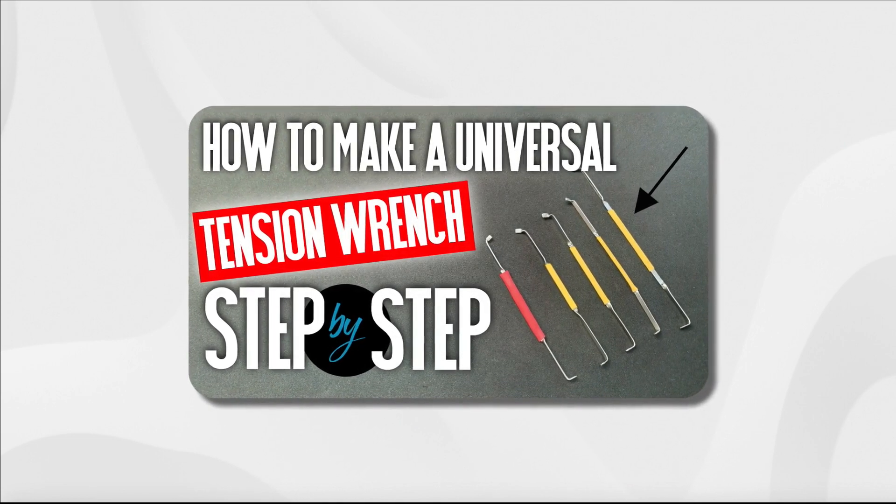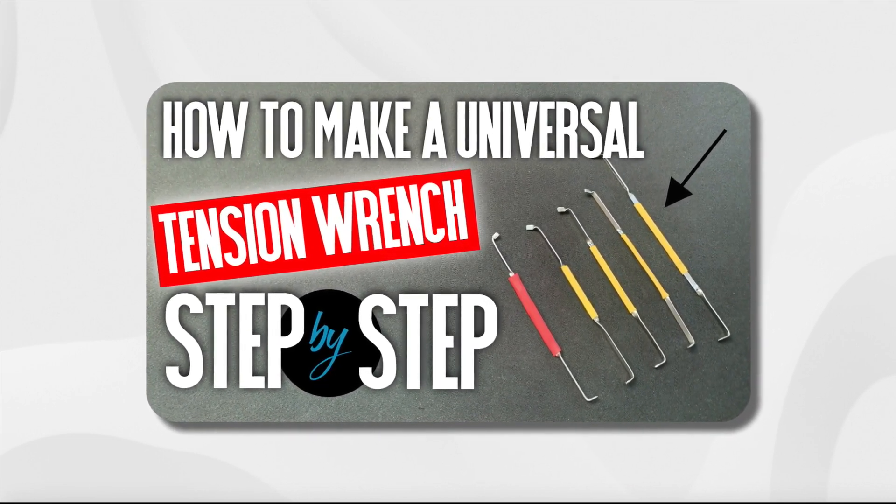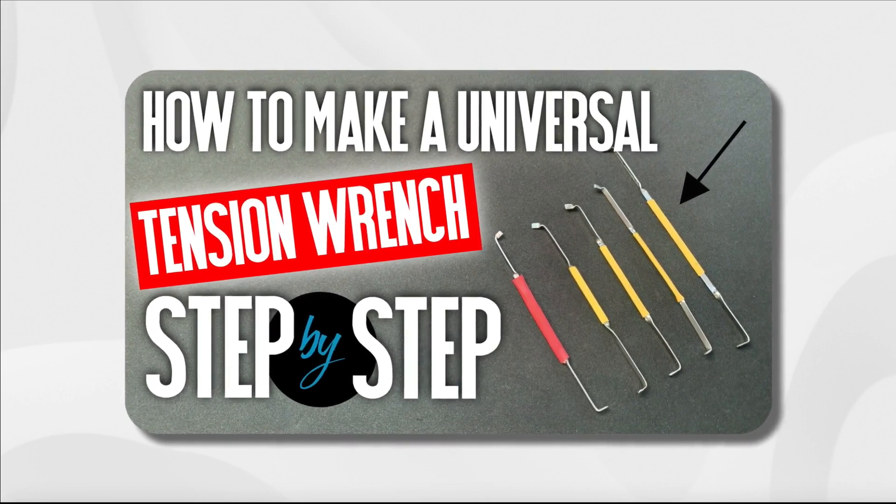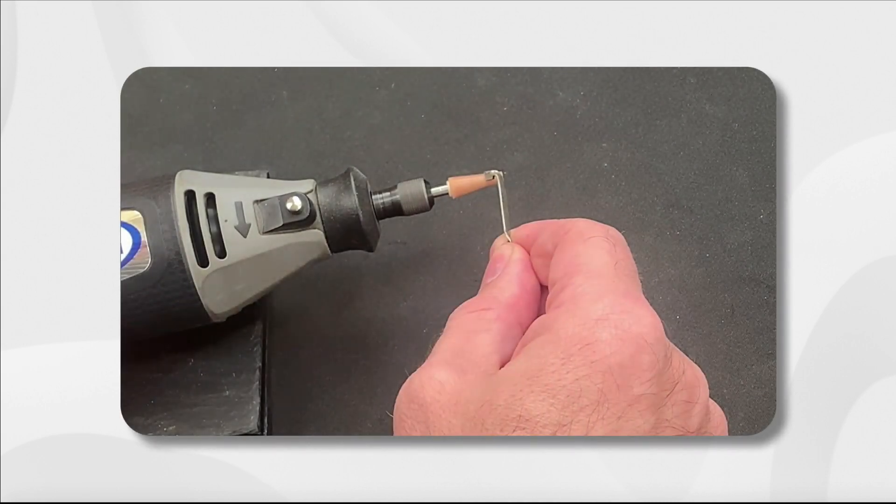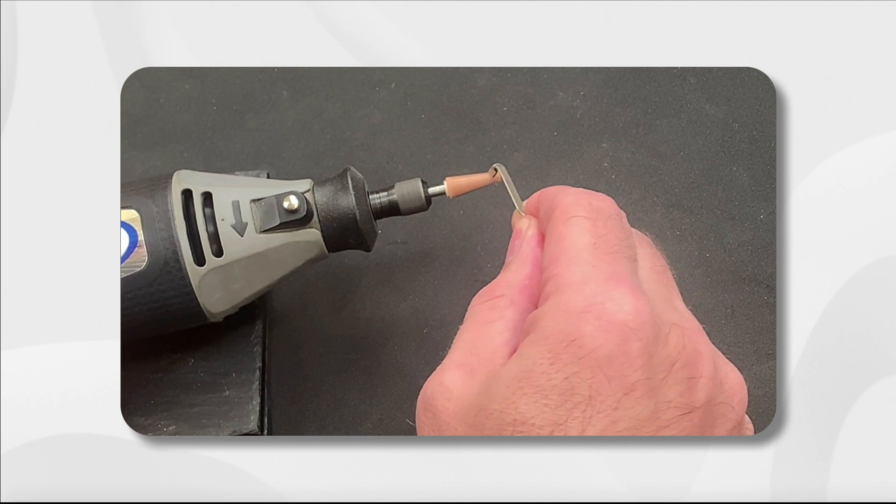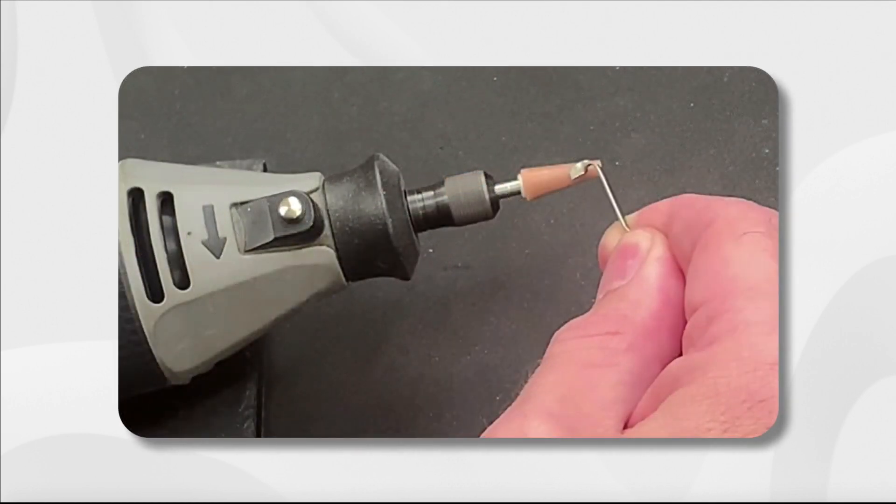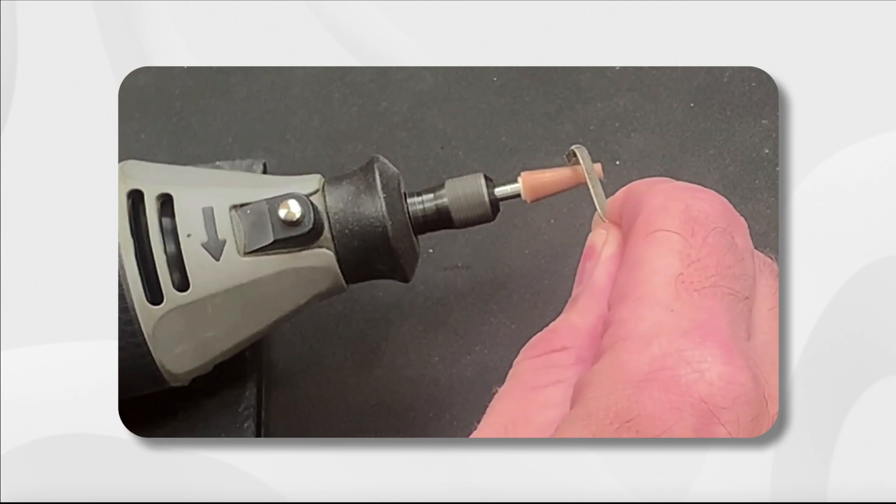A month or so ago I released one of my more popular tutorial videos in which I demonstrated how to make a Chris Capone inspired universal tension wrench from windscreen wipers. As part of that process I used a Dremel to grind and polish the steel stock, which inspired one or two comments from concerned viewers who noticed that there was a little bit of drift because I was necessarily operating single-handed.